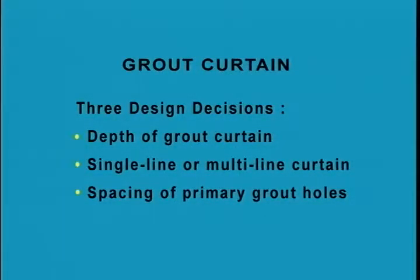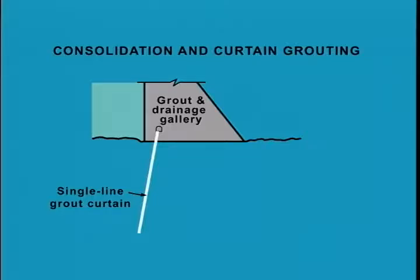In preparing drawings and specifications, the design team must make three decisions about the grout curtain geometry: the depth of the grout curtain, single-line versus multi-line curtain, and the spacing of the primary grout holes. The primary grout holes are the first holes drilled of the curtain — widely spaced and carried to considerable depths. I prefer to drill these with core recovery and with Lugeon permeability tests, but only for about one in four or one in five of the primary holes.